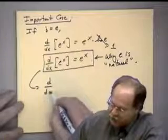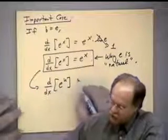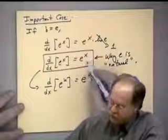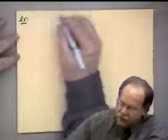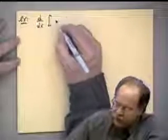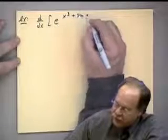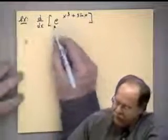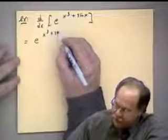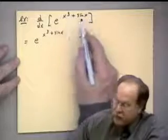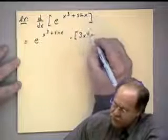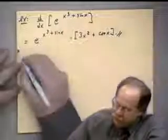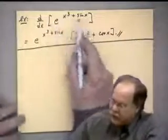That is why e is considered natural: because this gives the simplest possible derivative. The generalization: the derivative of e to the u is e to the u times du/dx. For example, the derivative of e to the (x³ + sin x) is e to the (x³ + sin x) times (3x² + cos x), since the chain rule requires taking the derivative of the exponent.